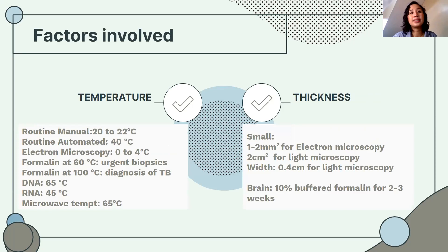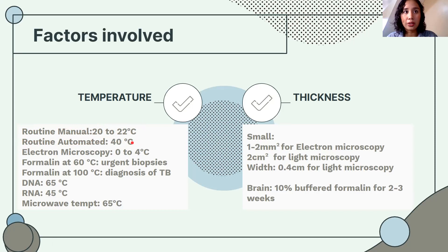Temperature: in routine fixation, we process at ambient or room temperature of 20 to 22 degrees Celsius. However, in automated tissue processors such as fluid transfer processors, temperature is set at 40 degrees Celsius. Subjecting tissue to heat hastens the penetration of formalin — at higher temperatures, molecules move faster and can penetrate more easily.